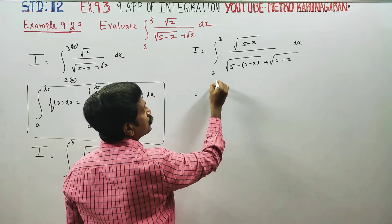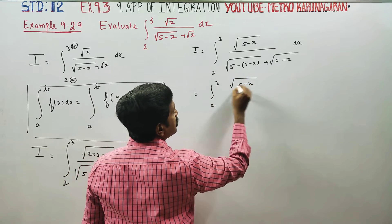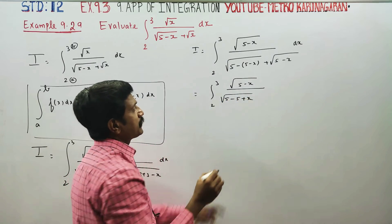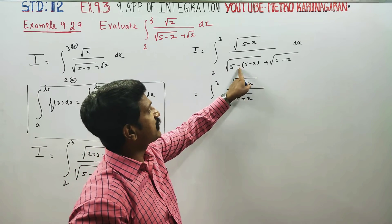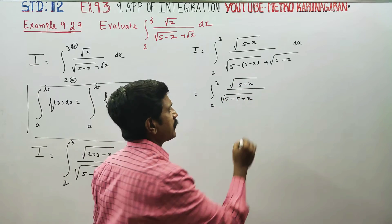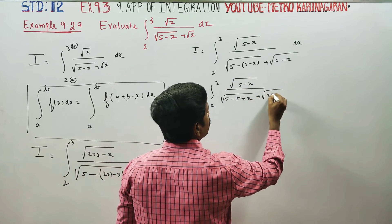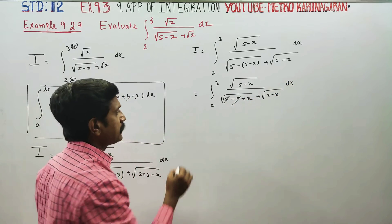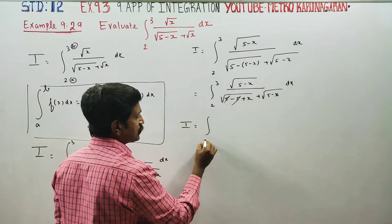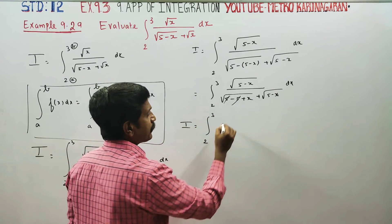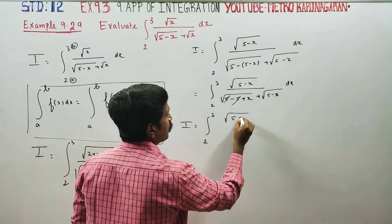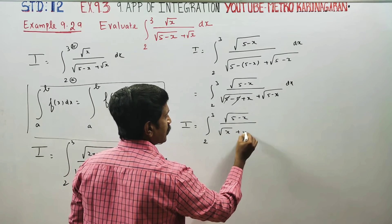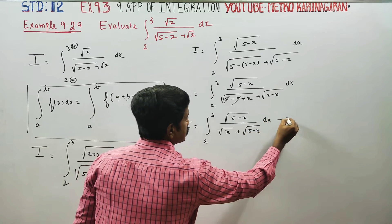Next, we have from 2 to 3: root of 5 minus x in the numerator, and in the denominator root(5 minus x) plus root x. The 5s cancel appropriately. This is the result of applying the property — call it equation 2, while the original integral was equation 1.